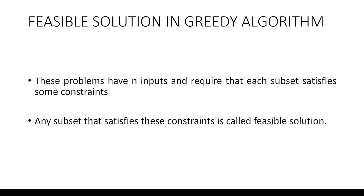These problems have n inputs and it is required that each subset satisfies some constraint. Any subset that satisfies these constraints we call it as a feasible solution. A feasible solution is one that satisfies all the given constraints or requirements of a problem. It may not be the best or most efficient solution, but it satisfies the constraints, hence we call it a feasible solution.